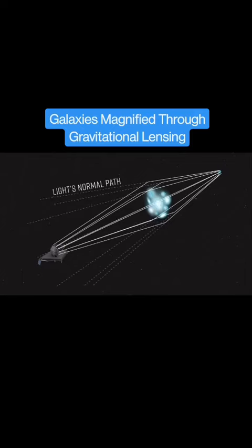Light that would have gone in other directions gets bent toward our telescope. That lets us see the very distant galaxy in more detail.